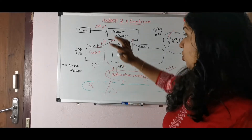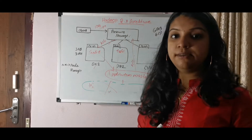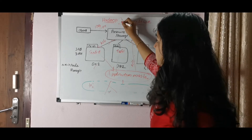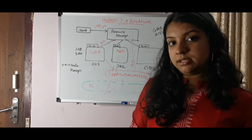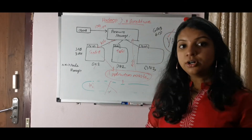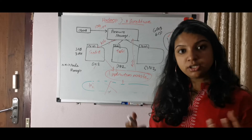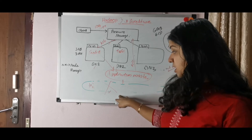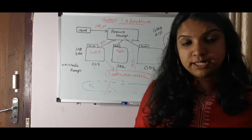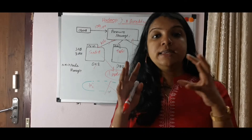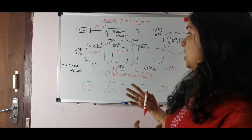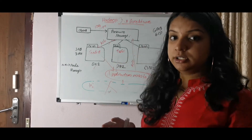The container concept is introduced in the 3.x architecture, while the 2.x architecture introduced only the YARN concept. So the main difference is: 2.x has YARN, while 3.x has YARN plus containers. I will explain the differences between the 2.x and 3.x architecture further.